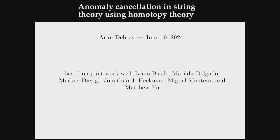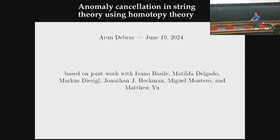I'm going to talk about anomaly cancellation in string theory using homotopy theory, specifically bordism. The idea of this talk is: you have a question in physics — here's a theory, maybe a field theory, maybe a supergravity theory, it has an anomaly — is that anomaly trivial or not? I want to convey how to go from that question to a precise math question, solve it, and then, going back to physics, what does that imply?